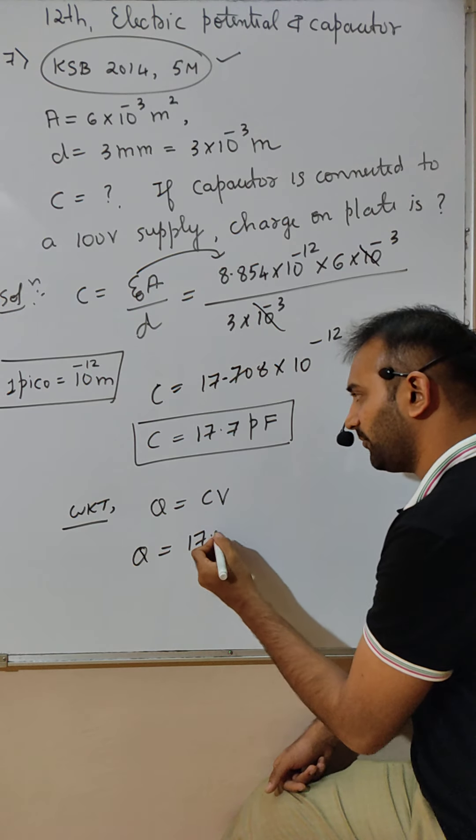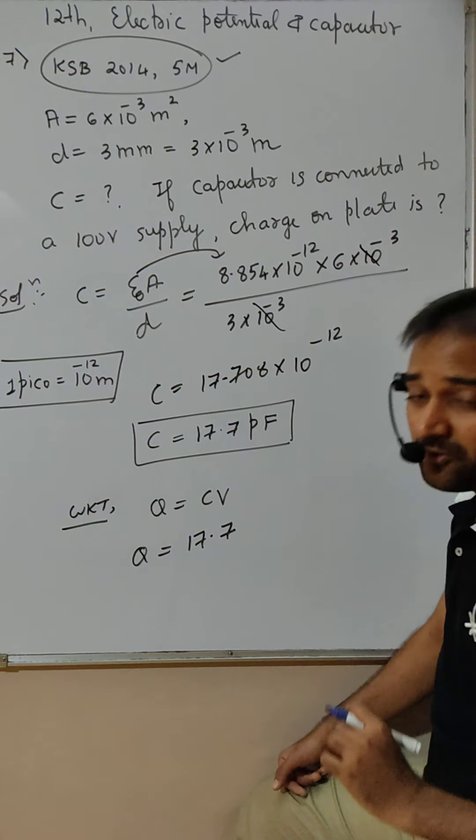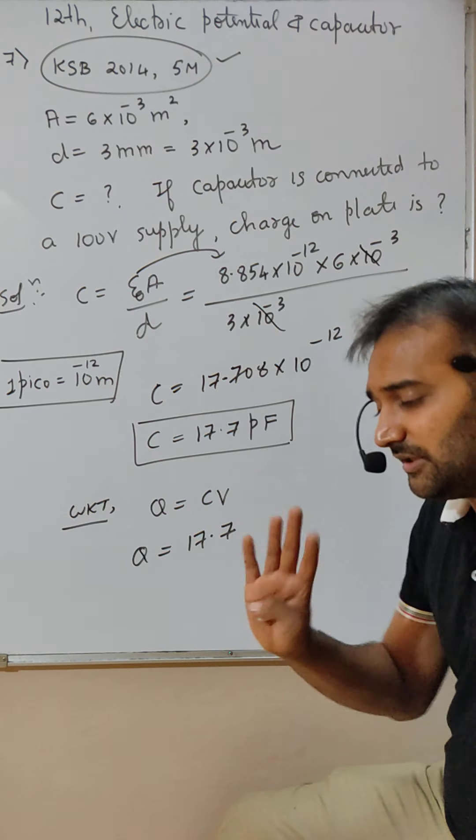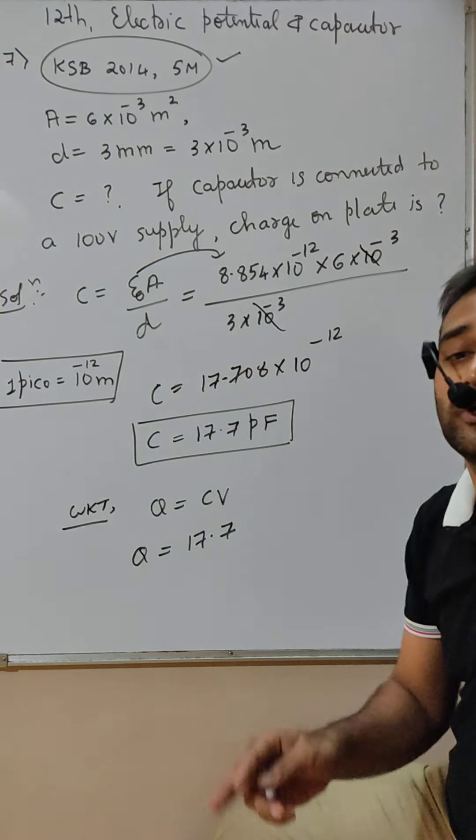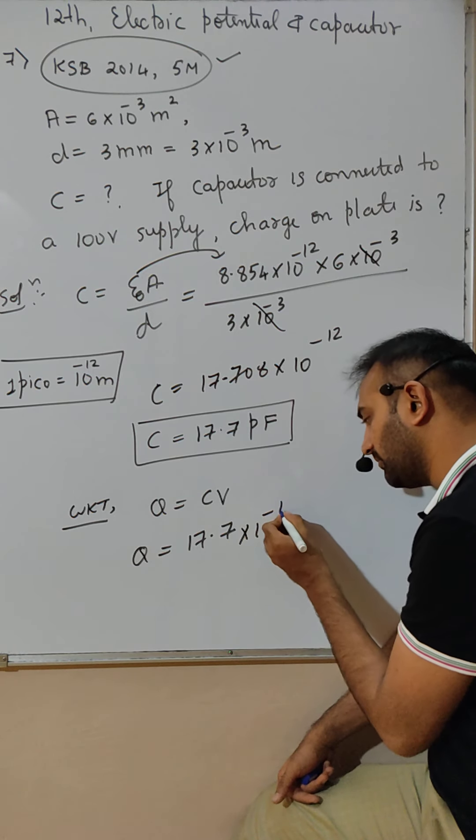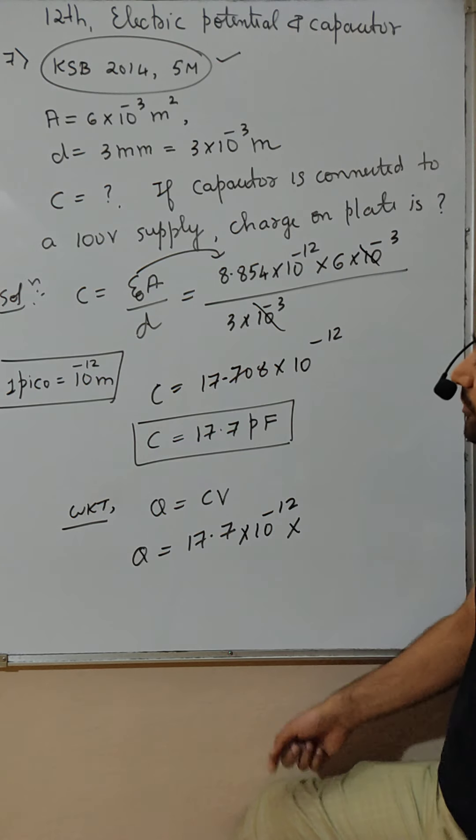C is 17.7. Now when you substitute here, you cannot take in pico, that is not allowed. You have to keep it in SI unit only, 10 raised to minus 12 only.